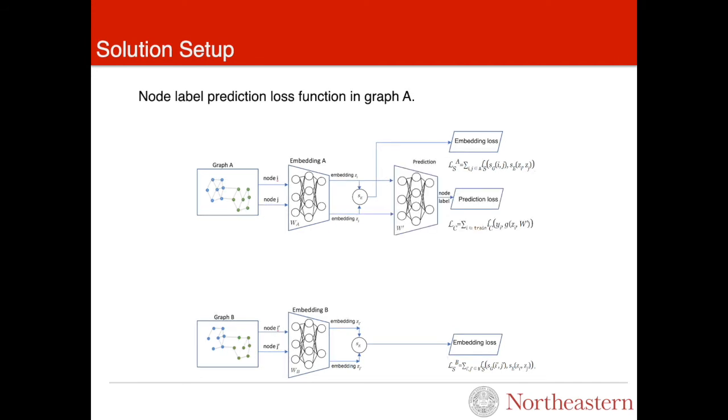We have a node label prediction loss function in graph A. It can be, for example, a square error, logistic, or cross entropy. The prediction model is parameterized by weights W'. In our model, we want to do two things.